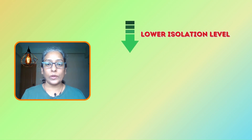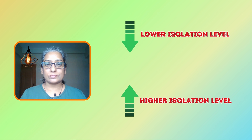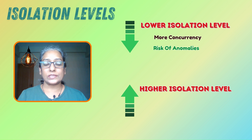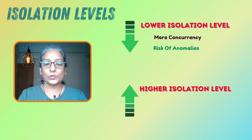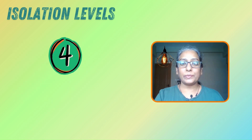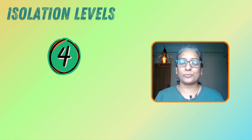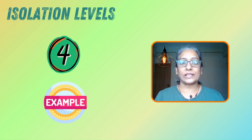Isolation levels range from lower to higher isolation levels. Lower isolation levels allow more concurrency but with fewer consistency guarantees, while higher isolation levels ensure consistency at the cost of performance. Let's break down the four main isolation levels with some real-world examples.